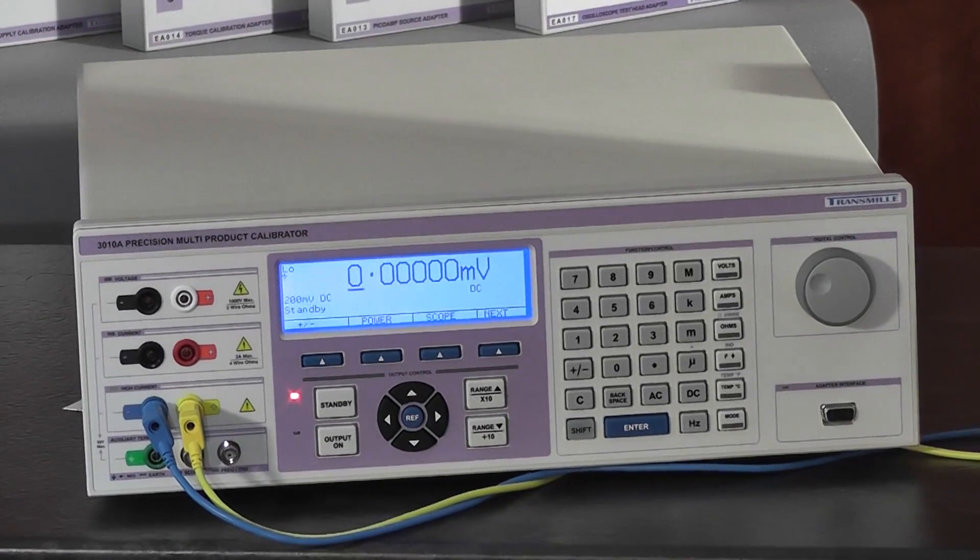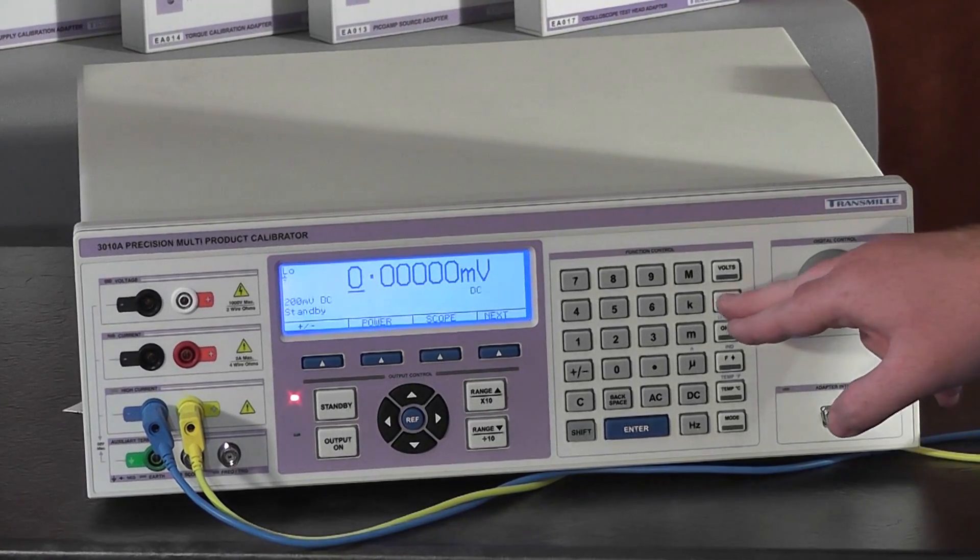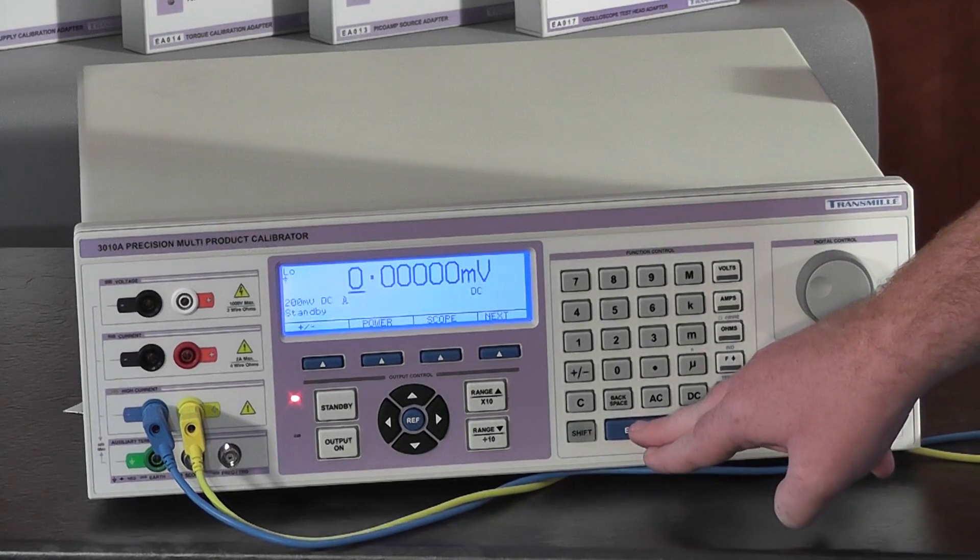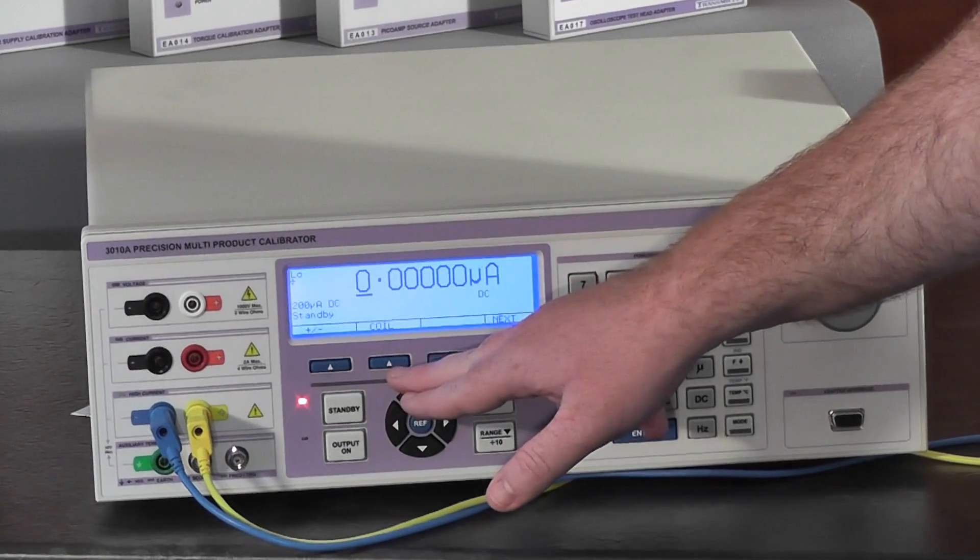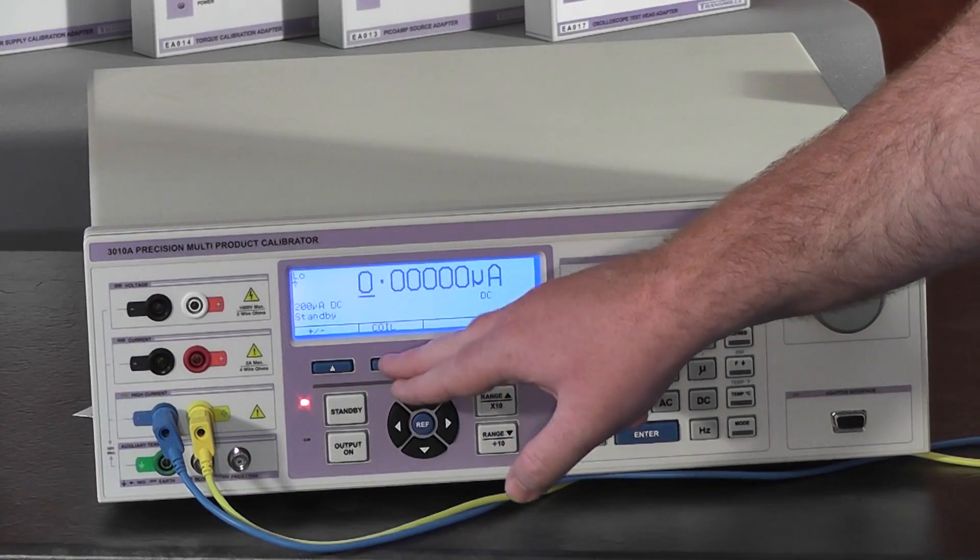To set the calibrator, first enter the current mode by selecting amps and pressing enter. As we're using a coil we want to use the coil mode, so we press coil.